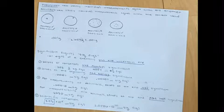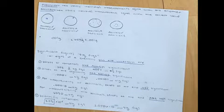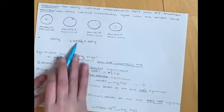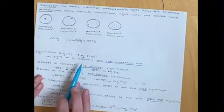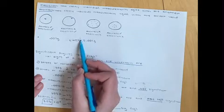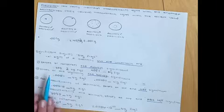Segueing into significant figures: significant figures, or sig figs, are all digits of a quantity plus one uncertain one. This explains that every measurement is uncertain, so it's implied — you don't write the plus or minus. The last digit is the uncertain one; we're not totally sure about that final digit.